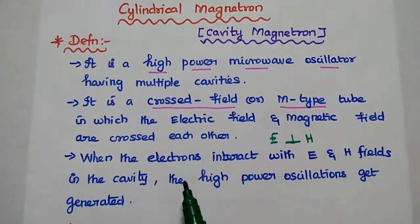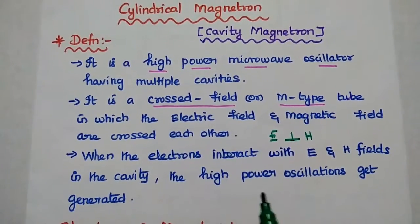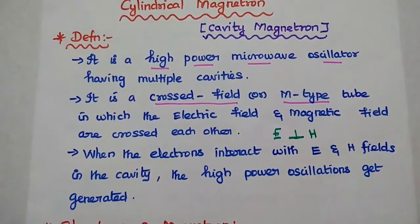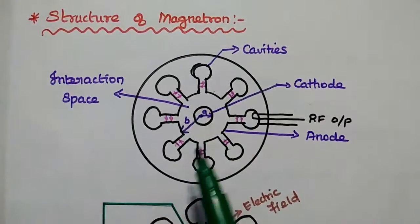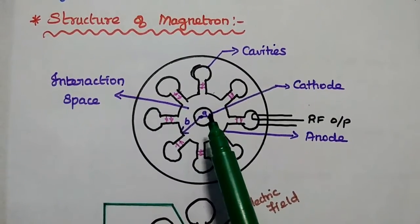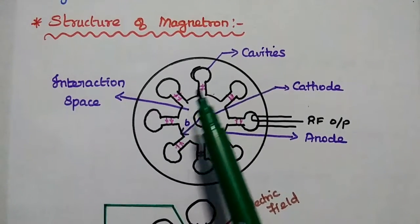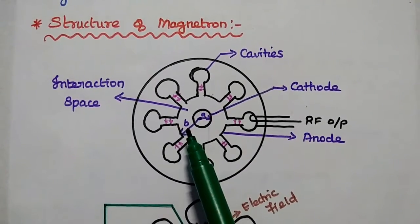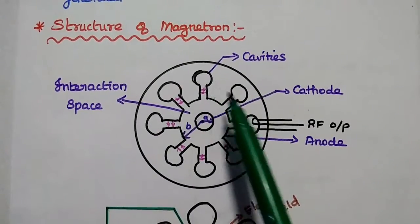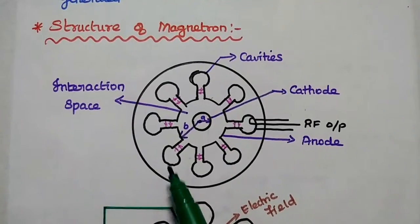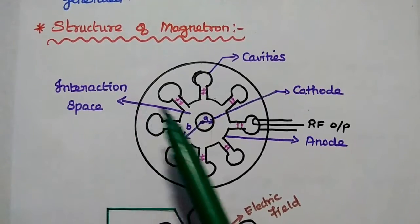The interaction of electrons with the electric field and magnetic fields in the resonant cavities can generate oscillation. The structure consists of a cylindrical cathode of radius A at the center, surrounded by a cylindrical anode of radius B. This anode consists of several equispaced cavities in its circumference. The space between the anode and cathode is called the interaction space.